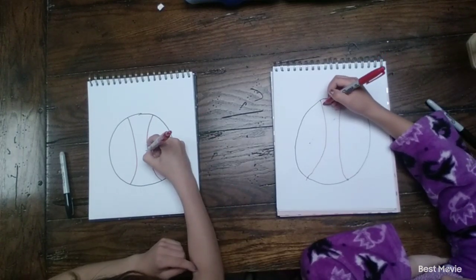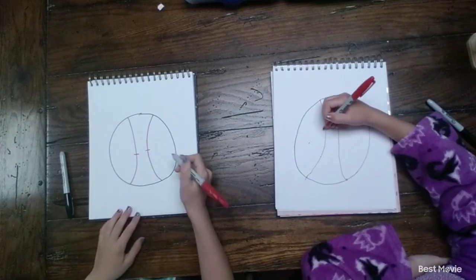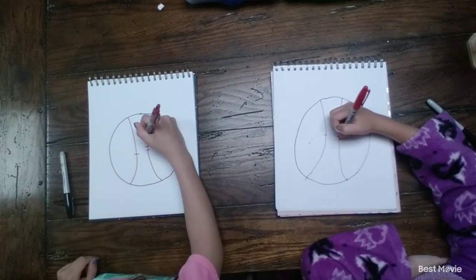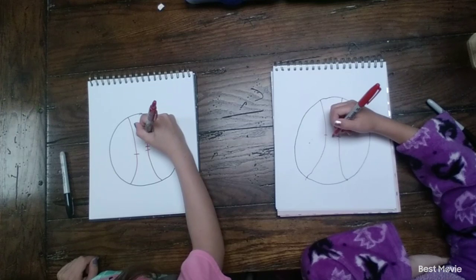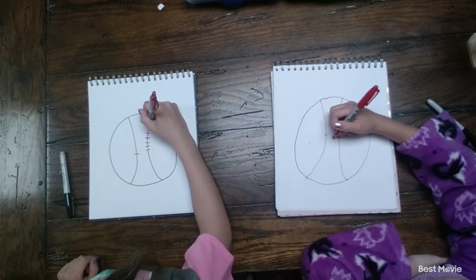So then you're going to try to draw two lines kind of like in the middle-ish area. And do it like fingers apart, around a finger. Try to do it in the same length because this is the stitching in the ball.